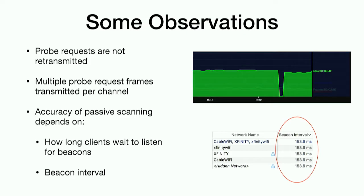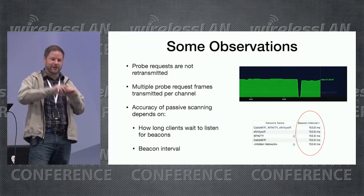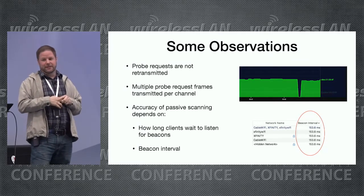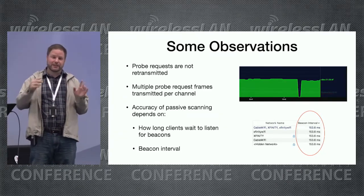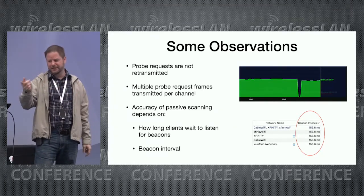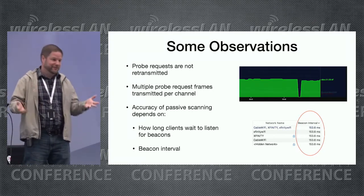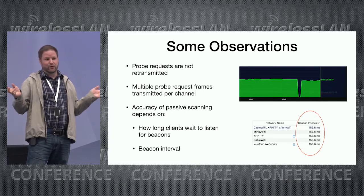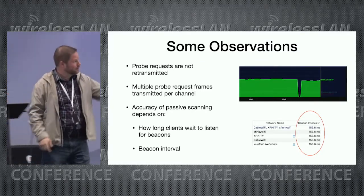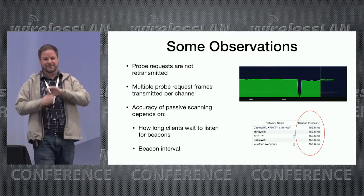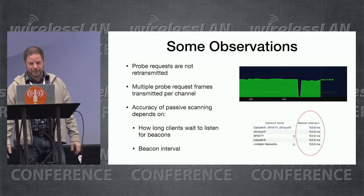With active scanning, the probe requests that get sent are not retransmitted because they are broadcast transmissions. The client sends a bunch of them — I've seen about four or five probe requests sent on each channel during scanning. But sometimes, due to interference or whatever, these requests are lost and you don't get the probe response back. So you see drops when tracking the signal strength of an AP — it disappears for a second and comes back — it's just the probe request being lost.